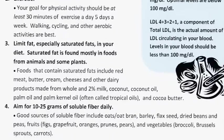Number four: Aim for 10 to 25 grams of soluble fiber daily. Good sources of soluble fiber include oats, oat bran, barley, flax seeds, dried beans and peas, fruits and vegetables.